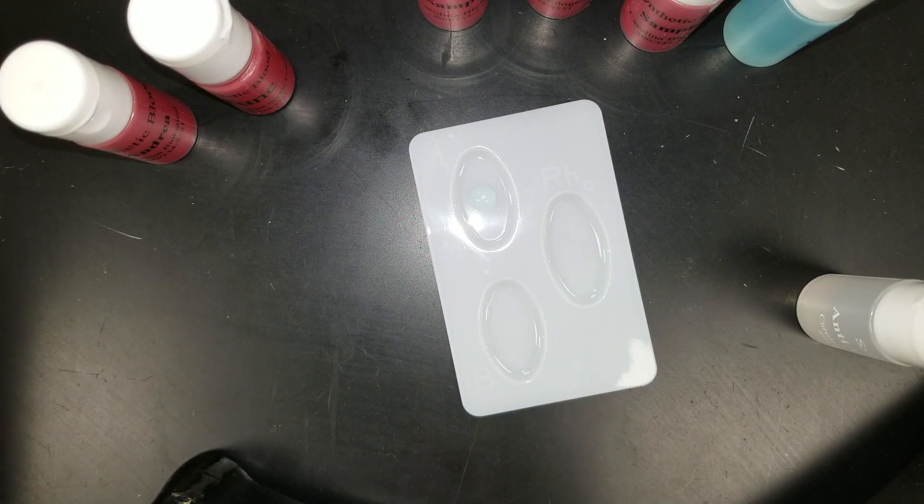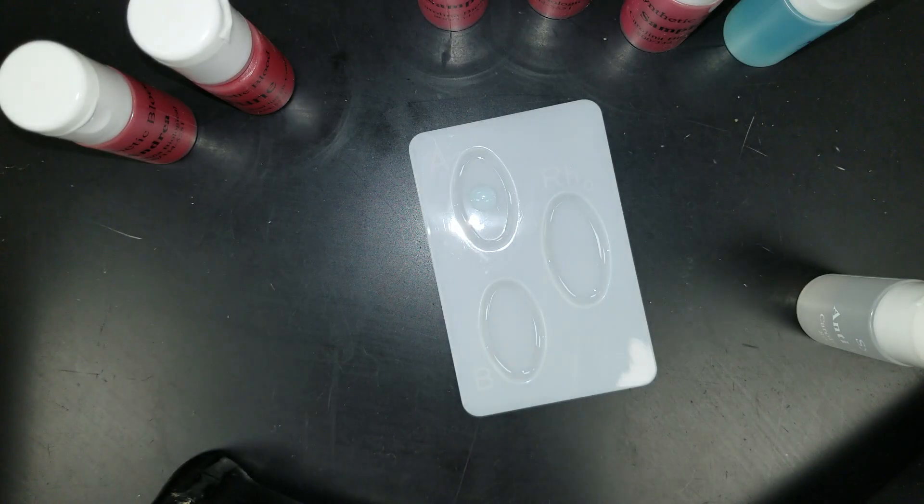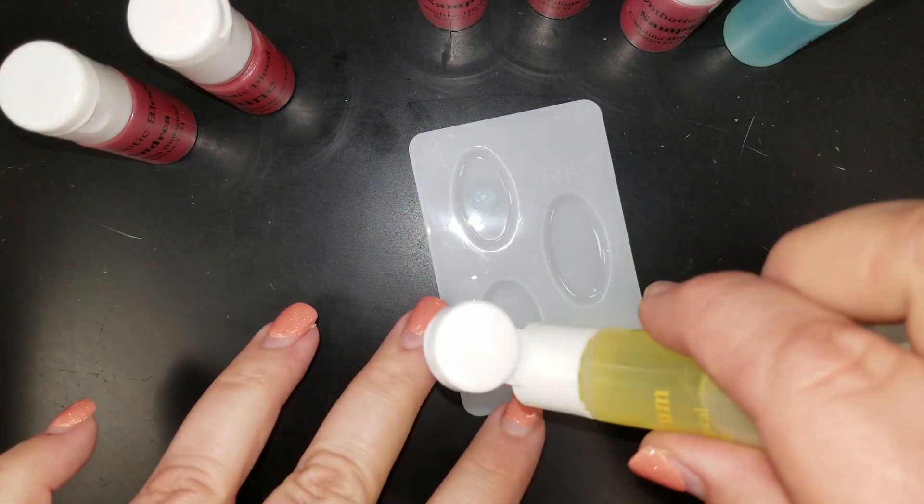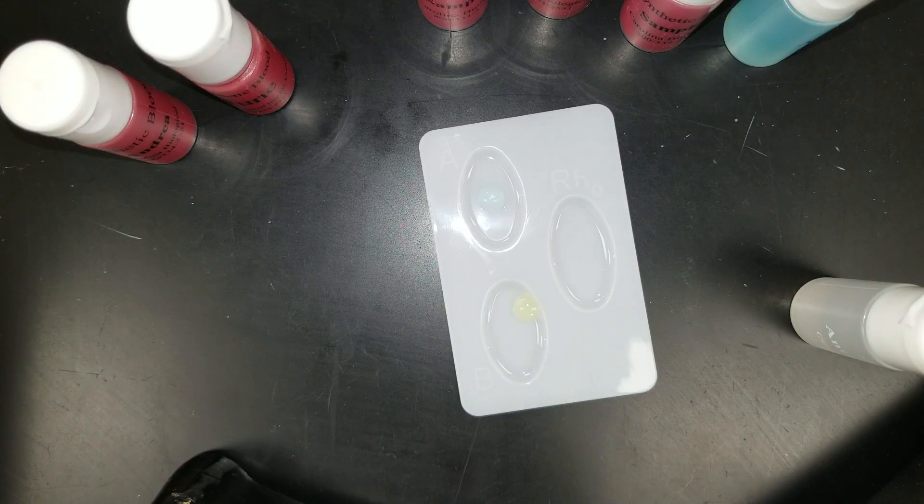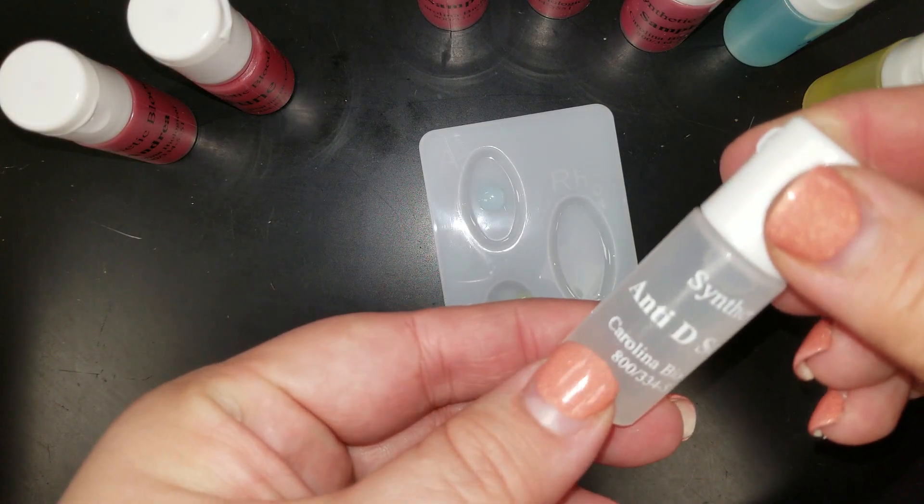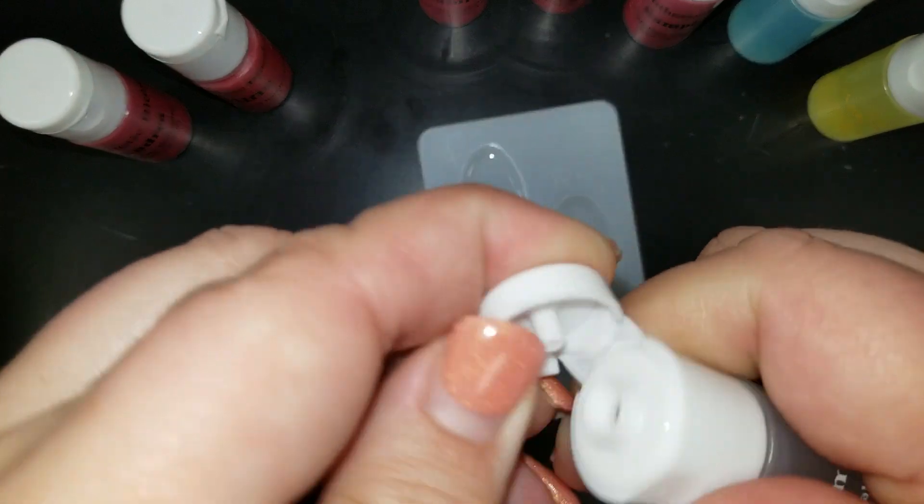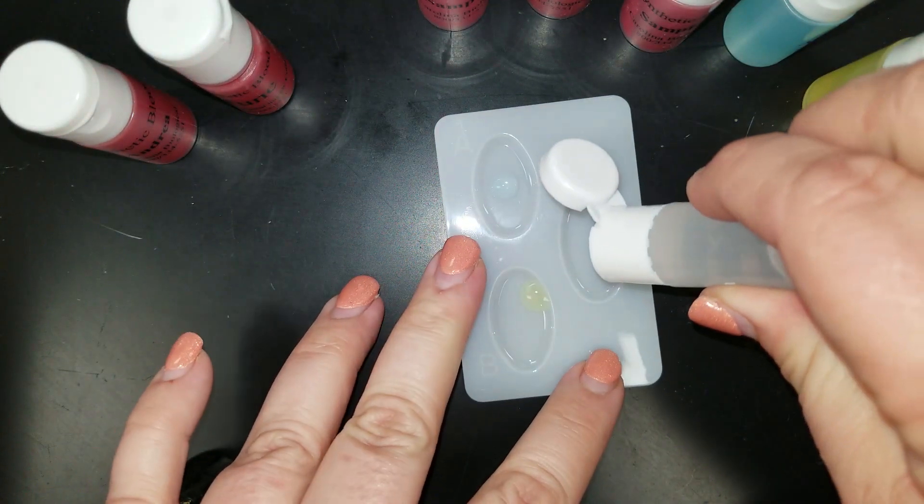And then we'll place a drop of our anti-B serum into our B well. Again, not touching the tip to the well. And then finally, our anti-D serum, which is just clear, we'll go into our last well.